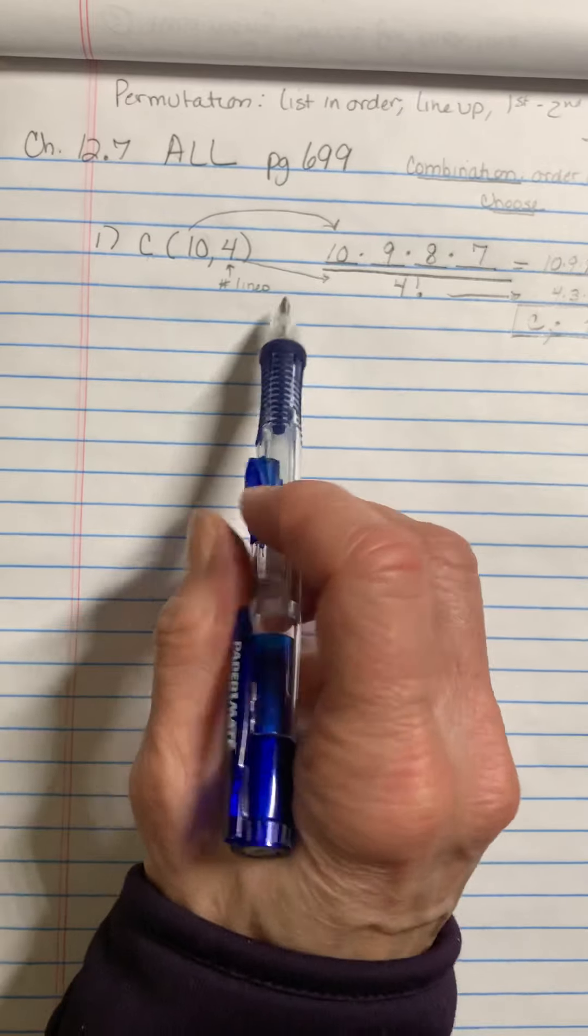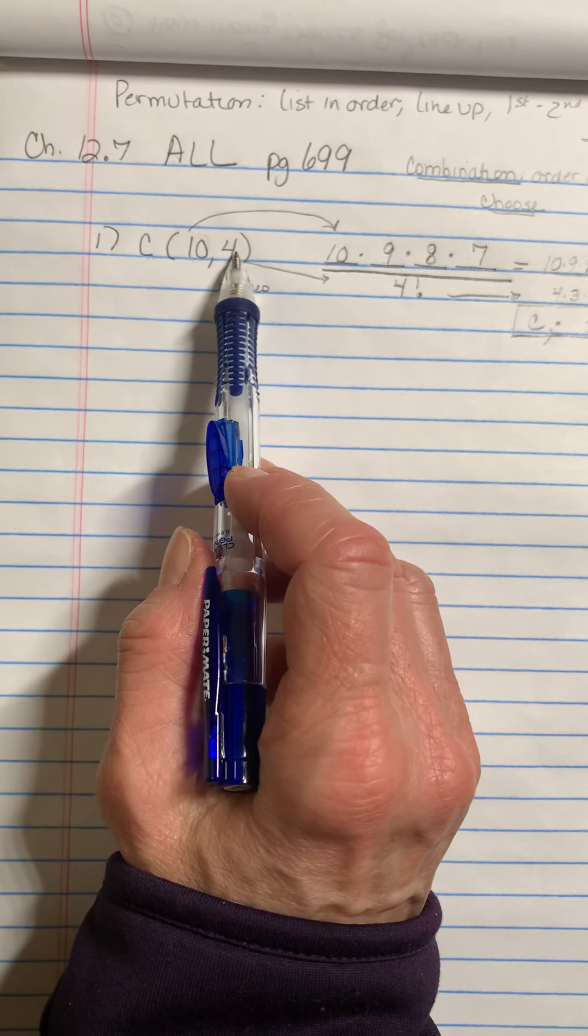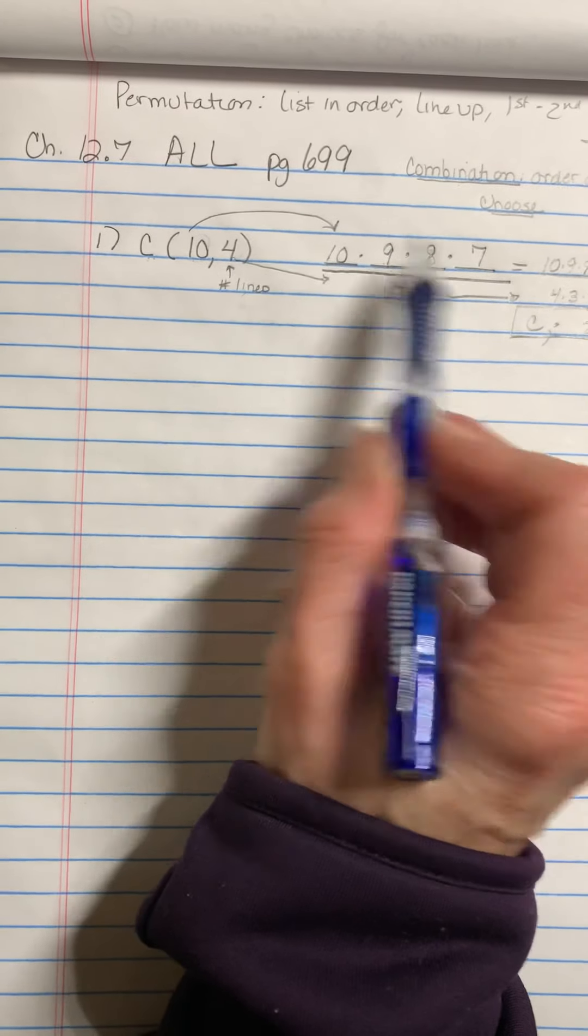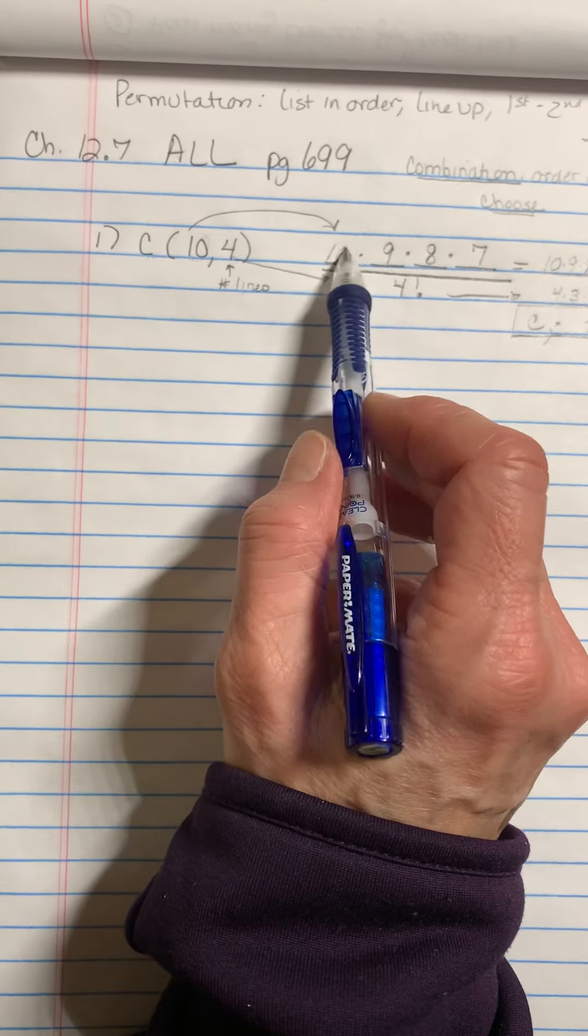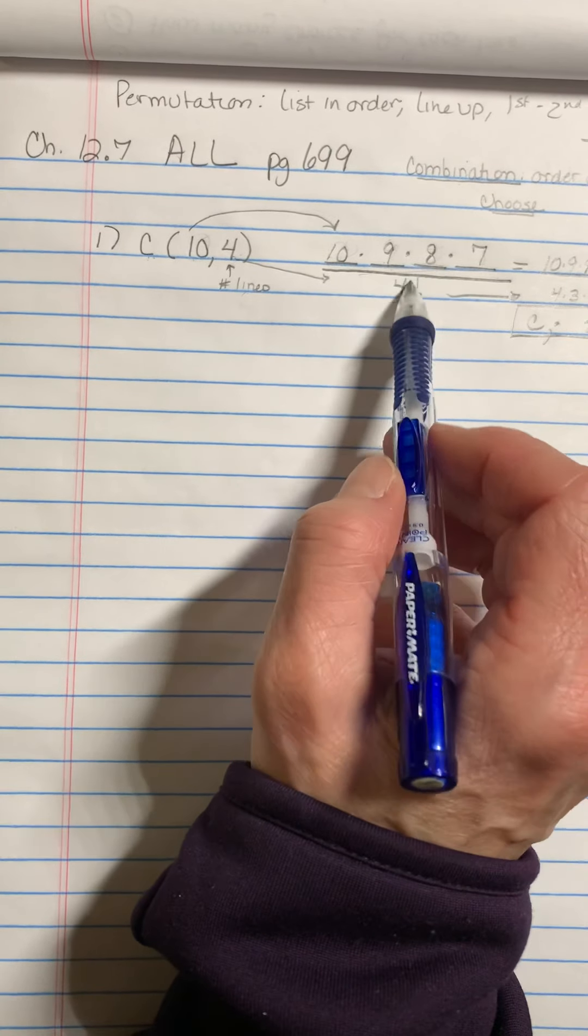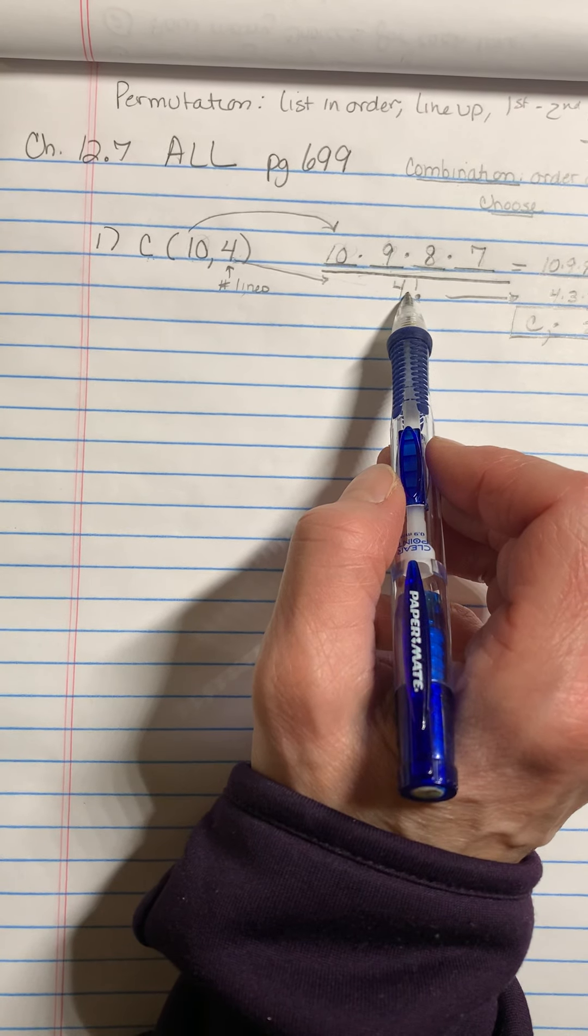So again, it's easy to follow. Remember, it's always the big number followed by the small number. The small number tells you how many lines. One, two, three, four. The big number is what you start at. You have 10 choices. Now you have nine. Now you have eight. Now you have seven. And then you have to remember to divide by the small number factorial, because that gets rid of your doubles.